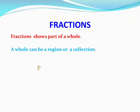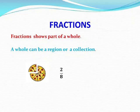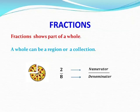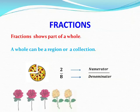A whole can be a region or a collection. Let us see examples. A whole pizza is divided into 8 equal parts and 2 parts are taken out. What is the fraction for that part? 2 by 8. Here 2 is the numerator and 8 is the denominator. Numerator is the number of equal parts which have been taken out or left out. Denominator is the total number of equal parts in which the whole is divided into.